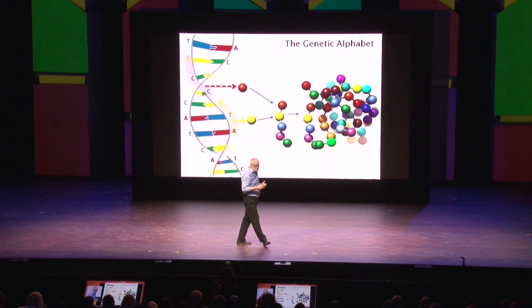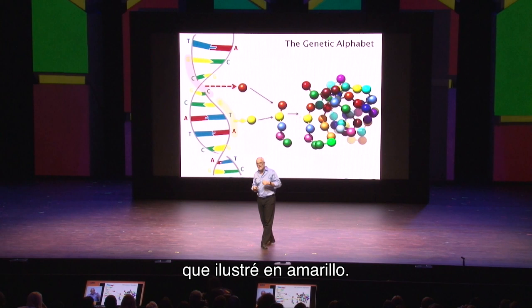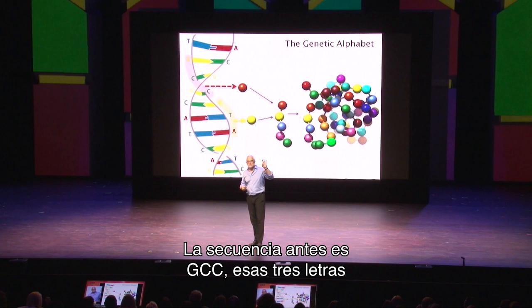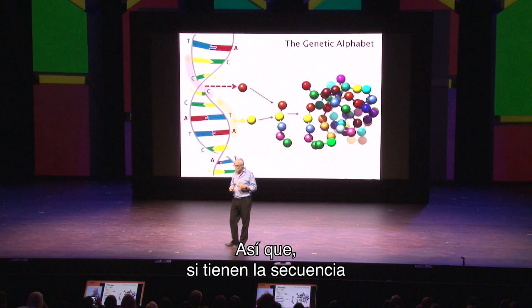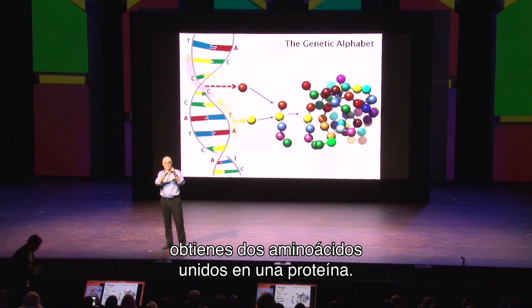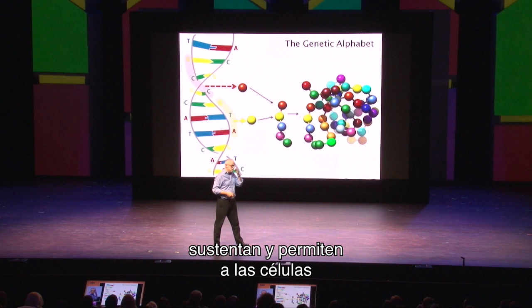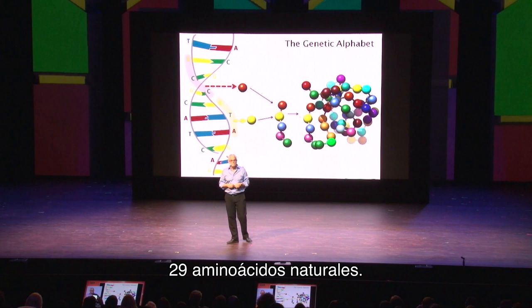In the example shown here, you have a sequence — GTA — that would be translated as the amino acid shown as a little yellow ball. And the sequence before it — GCC — those three letters correspond to the amino acid shown in red. So if you have the sequence GCC followed by GTA, you get those two amino acids strung together in the protein. In that way, those four letters allow cells to build proteins out of up to 20 natural amino acids.